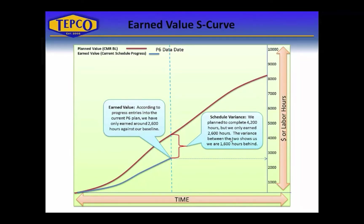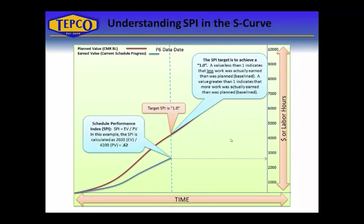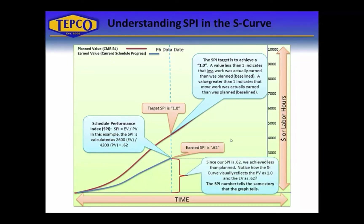We planned to get 4,200 hours achieved but only actually earned 2,600 hours, so we're 1,600 hours behind. If we consider that our goal is to have an SPI of 1, our scheduled performance in this case is 0.62, which is the 2,600 hours divided by the 4,200 hours. We can visually see in the graph that our earned line is at about a 0.62 ratio compared to the planned line. Another way to look at it is that our target is 100% as of the data date and we only earned 62%.